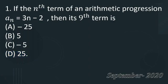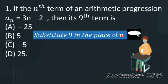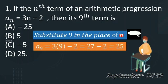The question is taken from September 2020 question paper. You need not do any paperwork or rough work. Simply it is an oral work, that's all. Substitute 9 in the place of n: a_9 means 3 into 9 minus 2, that means 27 minus 2, that is equal to 25. So the correct option is D.